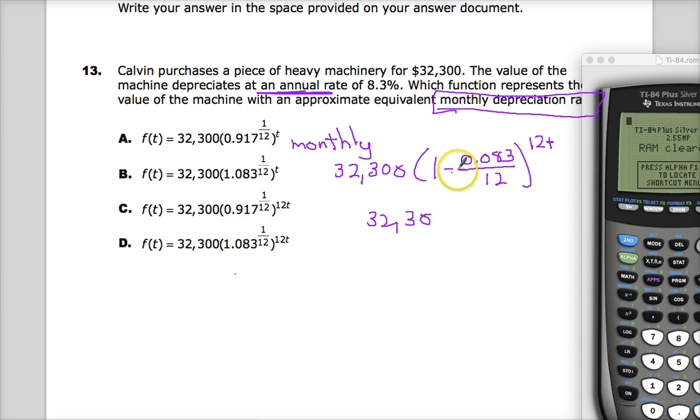But, they want you to not worry about this part. And, they just want you to do 1 minus 0.083. And, they're going to apply that with an exponent of 1 twelfth, which is really weird. 12t.